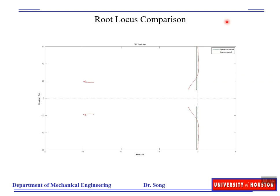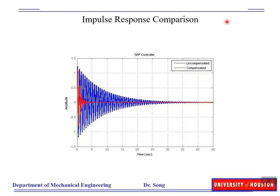Next we verify this in the time domain. The red curve is the compensated system and the blue one is the uncompensated system, when subject to an impulse response. We can clearly see that the vibration is greatly reduced by increasing the damping ratio. Thank you for watching.